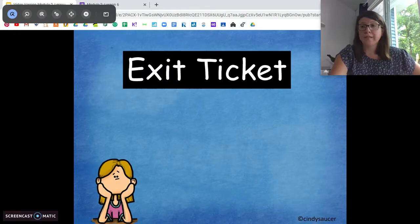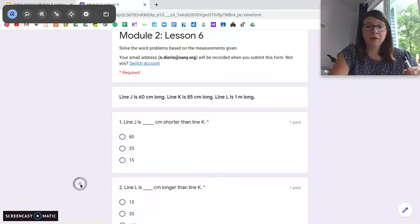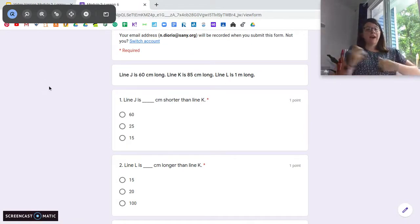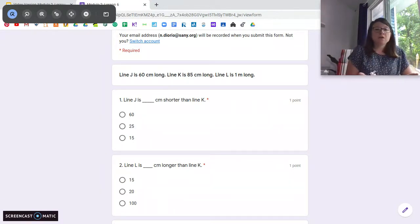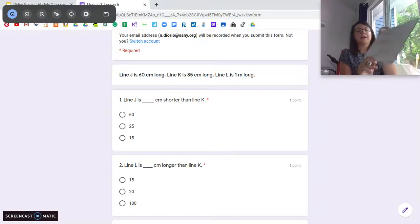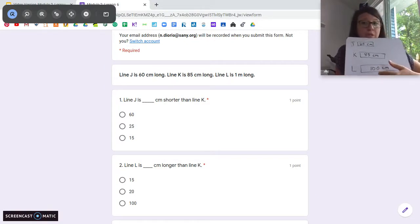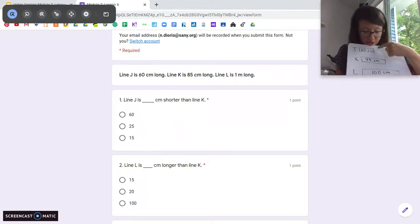So your exit ticket is similar to the line exercises we did in our problem set today. You're going to have three lines to work with. Line J, line K, line L. If I were you, I would get my piece of paper and label the three lines and draw them like the tape diagram. So the longest line is line L. That's one meter or 100 centimeters. Line K is 85 centimeters and line J is 60 centimeters. So what I did was just draw them in order so I can see which one's the longest and I changed one meter to 100 centimeters because I know one meter is 100 centimeters. And then I did 85 and 60 and I did the boxes to show the lengths.